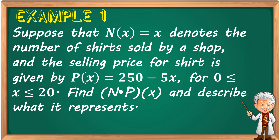The price of the shirt is given by the function p(x) = 250 − 5x, provided that the number of shirts is greater than or equal to 0 but less than or equal to 20. Meaning, p(x) = 250 − 5x applies when the number of shirts is between 0 and 20.